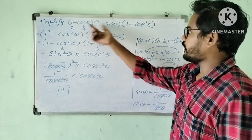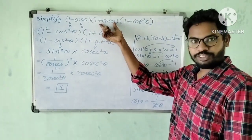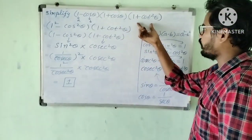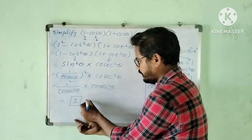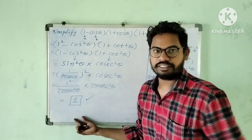Therefore, 1 minus cos theta into 1 plus cos theta into 1 plus cos squared theta is equal to 1. This is the final answer.